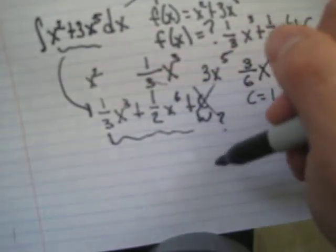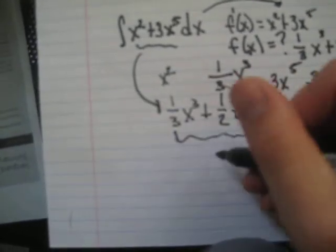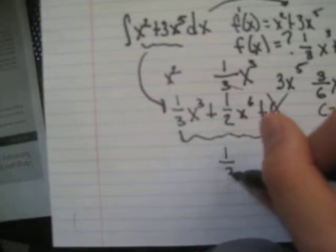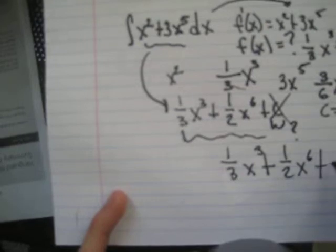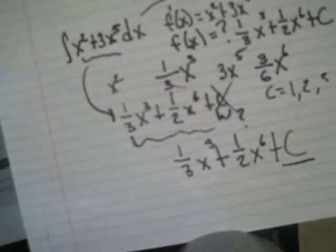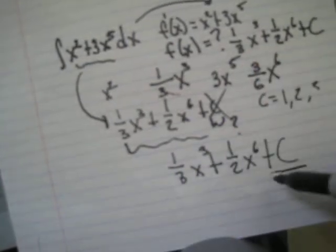So we don't really know what c is. It could be anything. And it's really important that you don't forget it like I did in the other example. So, our final answer is going to be 1 third x cubed plus 1 half x to the sixth plus c. And that c is very important because it's a placeholder. We don't know what goes here. It could be anything.